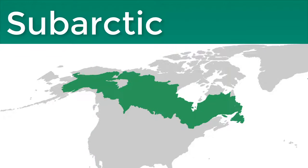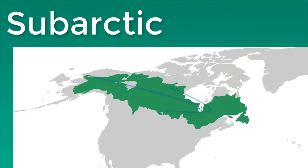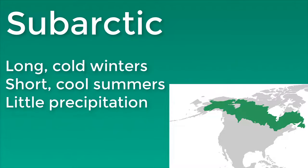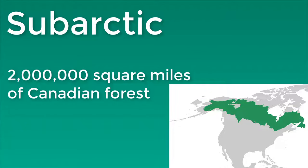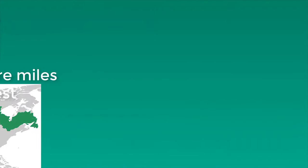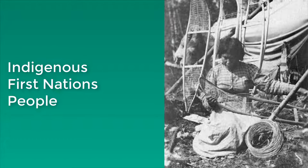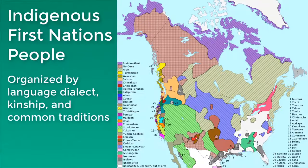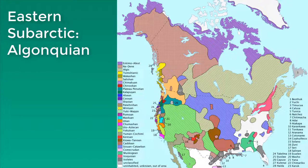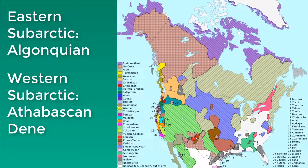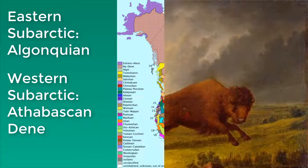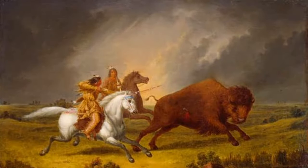The subarctic, bordering the tundra to the south and stretching from the American state of Alaska all the way across Canada to the eastern tip of Newfoundland, is a climate region characterized by long, cold winters, short, cool summers, and relatively little precipitation. The Canadian subarctic includes almost two million square miles of forest and is home to a variety of indigenous first nations people, many of whom were traditionally organized into bands or groups who spoke the same language dialect and were related by kinship and common traditions. People of the eastern subarctic belonged to the Algonquian language family, while people of the western subarctic belonged to the Athapascan or Dene language family. Both the Dene and the Algonquian people traditionally subsisted by hunting, fishing, and gathering.